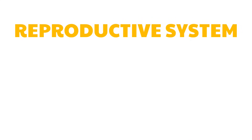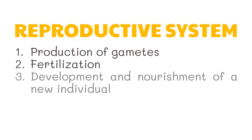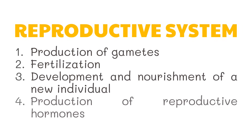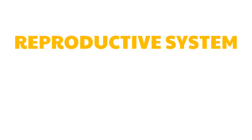Reproduction is an essential characteristic of living organisms, and functional male and female reproductive systems are necessary for humans to reproduce. The reproductive system performs the following functions: production of gametes, fertilization, development and nourishment of a new individual, and production of reproductive hormones.